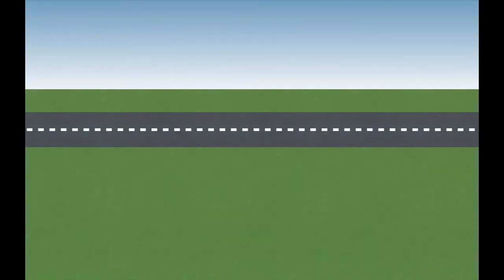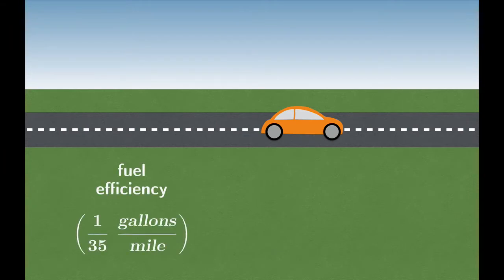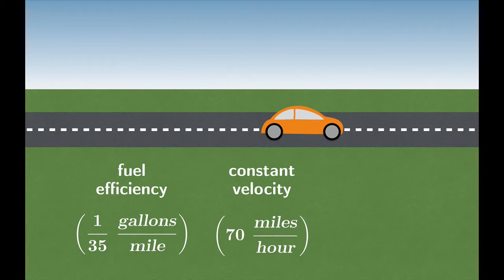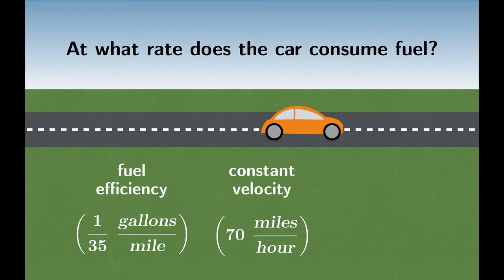We'll start with a problem that you could have seen in algebra classes years ago. Suppose a car is cruising down the highway and it has some sort of fuel efficiency. Let's imagine that it burns 1/35th of a gallon of gasoline per mile. Let's also suppose that the car is going at a constant velocity of 70 miles per hour. One question you could ask is at what rate does the car consume fuel? It's pretty clear in this case that if we just take the product of these two rates, which by the way gives us the number 2, we'll get the rate of consumption of fuel. If you analyze the units, you'll notice that the miles cancel and in fact we get 2 gallons per hour.